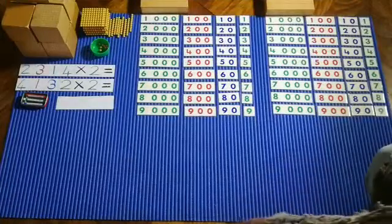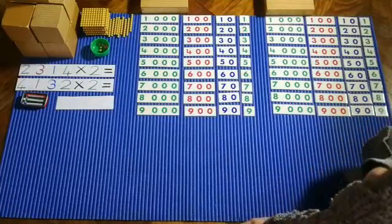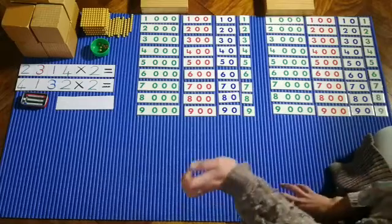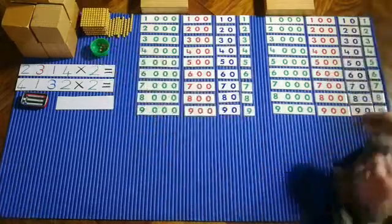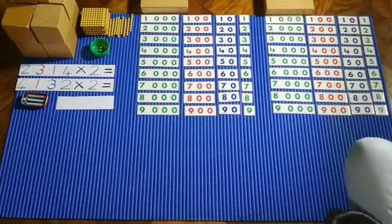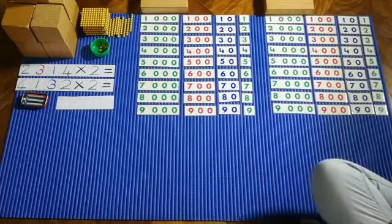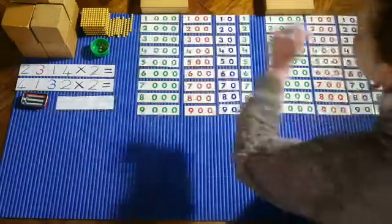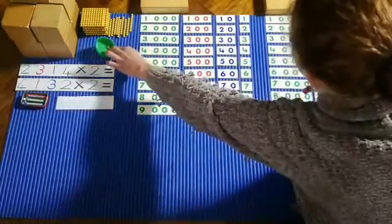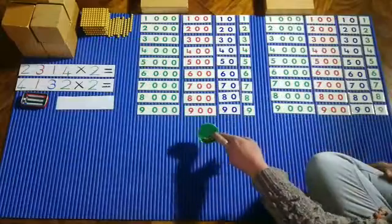Okay boys and girls, I've got lots of things on my mat today. Today I have got 9,000 cubes, 900 squares, nine 10 bead bars and nine golden beads.